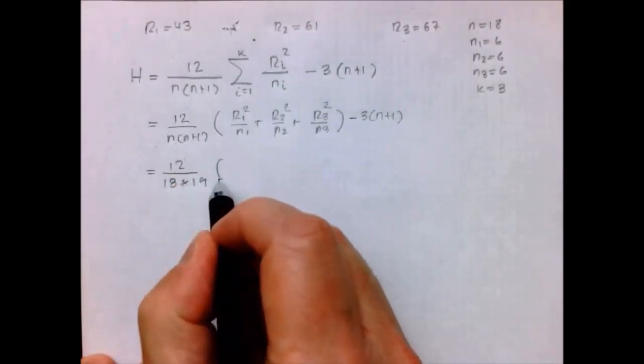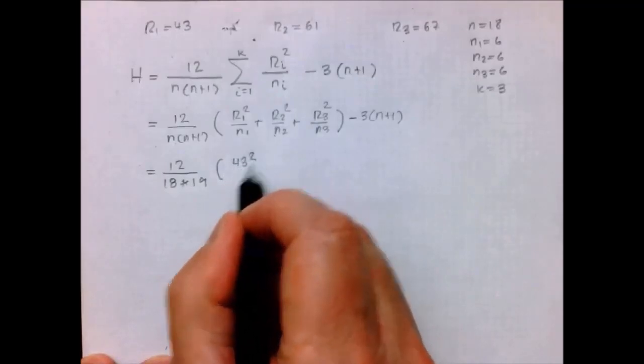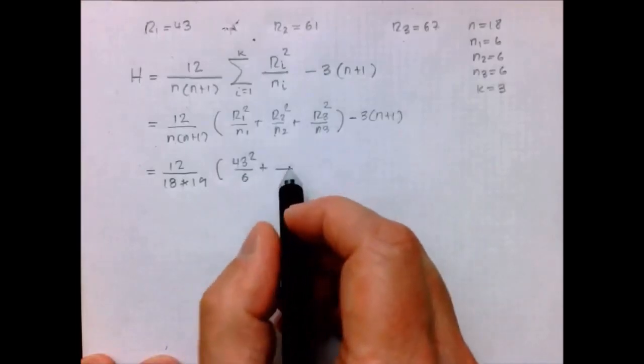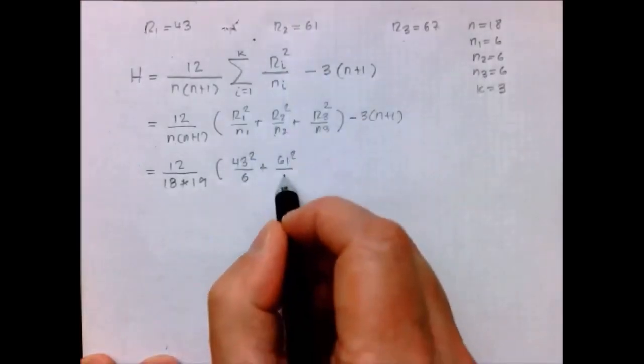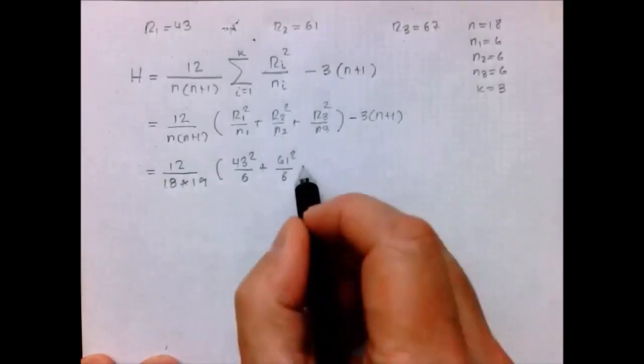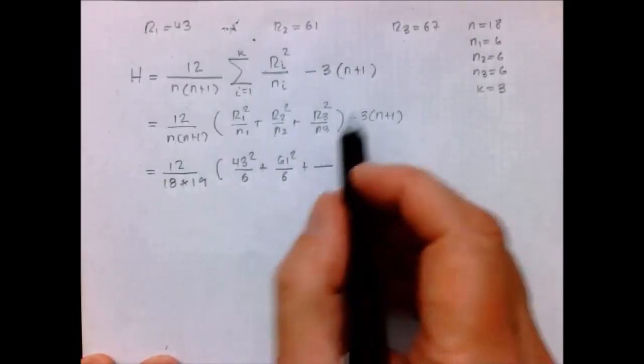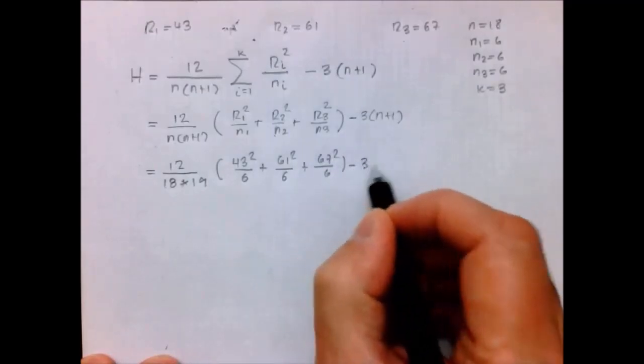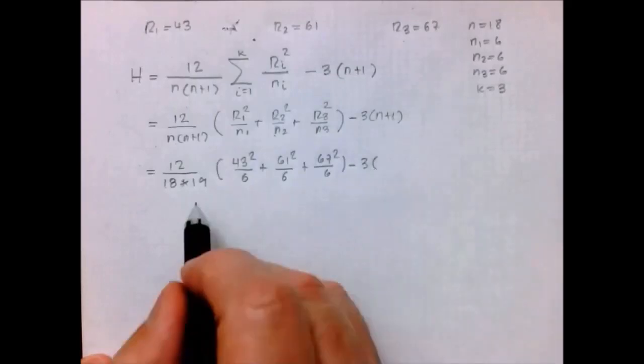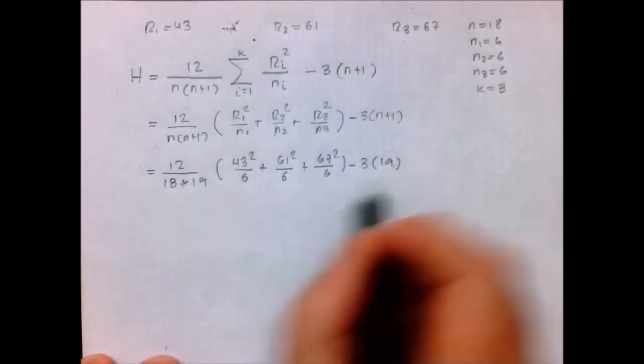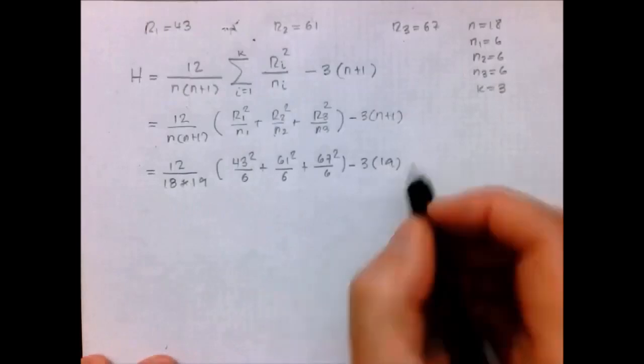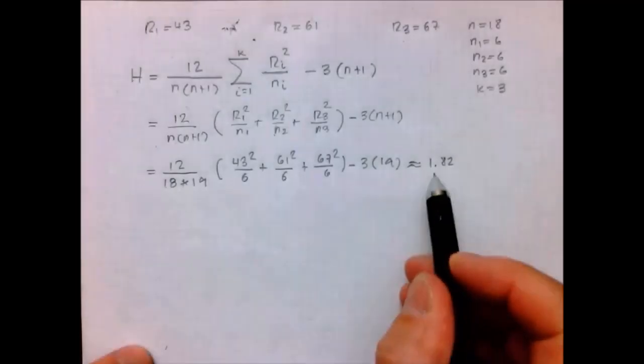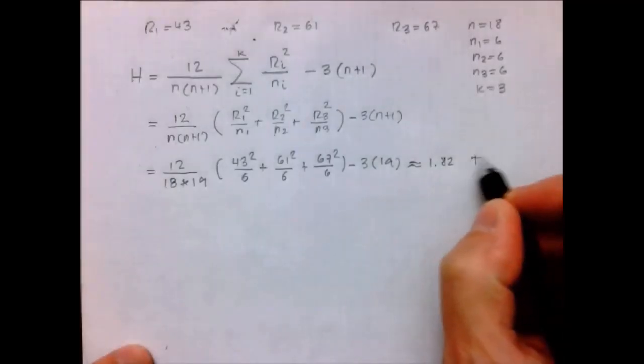And then I'm going to have 43 squared over N1, which is 6, plus R2 squared, which is 61 squared over 6 also, because N2 is also 6. And R3, which is 67 squared over 6, minus 3 times N plus 1, which is 19. We just have to do it with the calculator. That gave me 1.82. This is our test statistic.